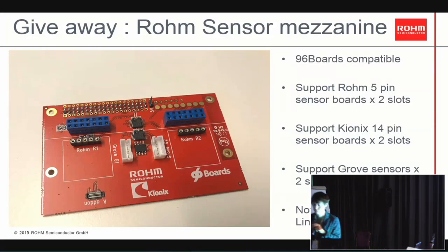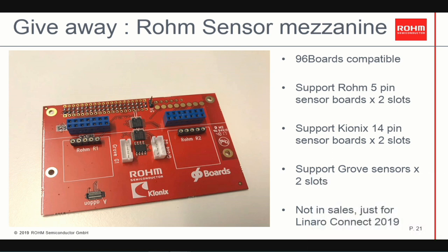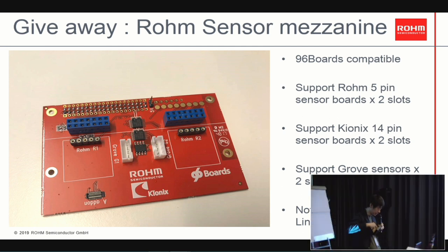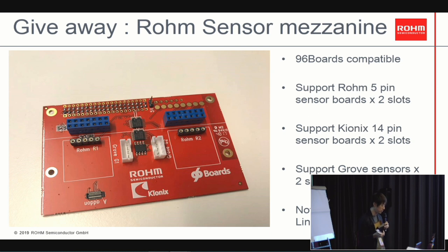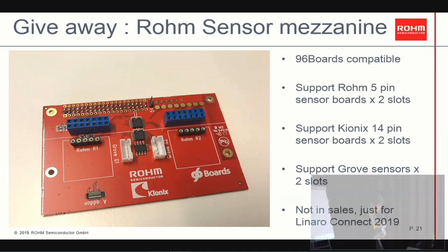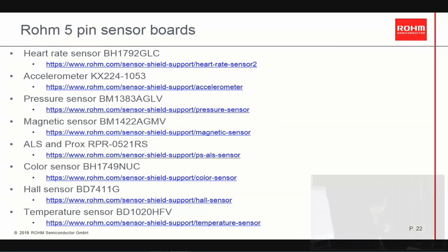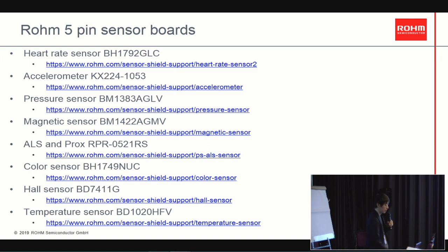For today's giveaway, I prepared sensor mezzanine boards. This is a 96Boards-compatible board. It supports ROM Semiconductor's 5-pin sensor port with two slots, and it also supports two slots of the Kionix 14-pin sensor port, and supports Grove sensors as well. It's not for sale — just for this event. You can get our sensor boards such as humidity sensor, accelerometer, pressure sensor, magnetic sensor, color sensor, hall sensor, and temperature sensor.